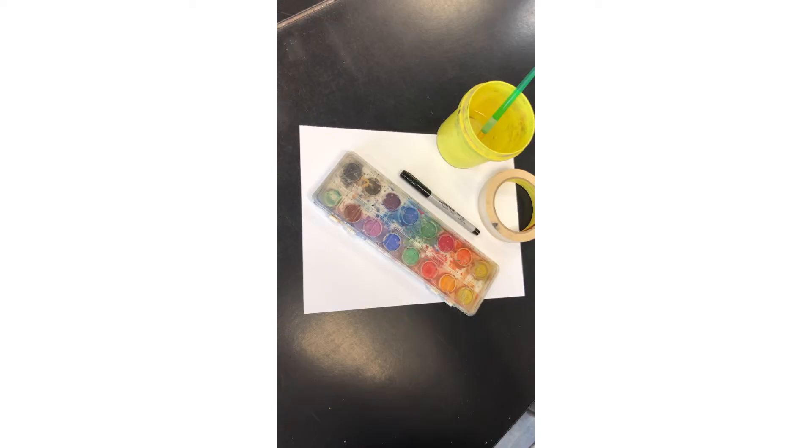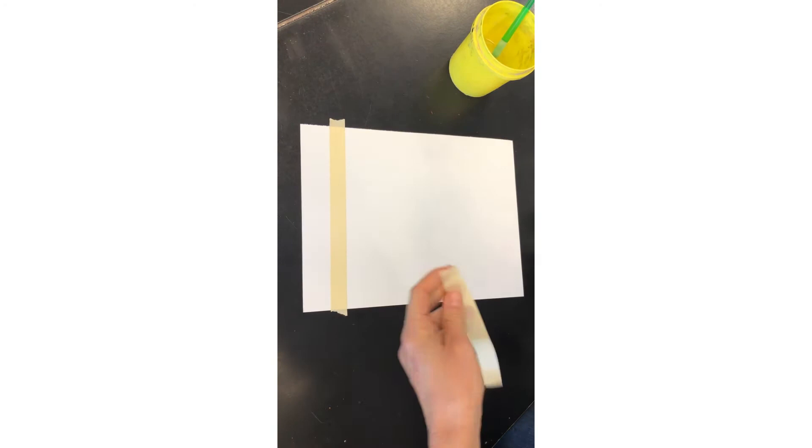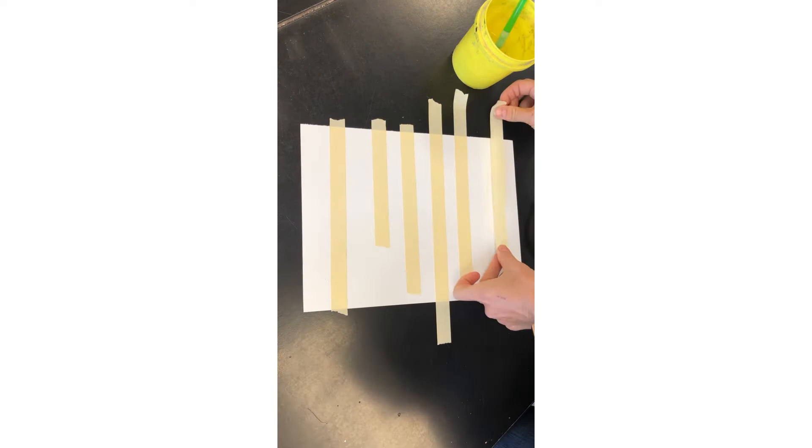First we're going to take our masking tape and place our trees wherever you'd like. You can do tall ones, short ones. If you make some in the back it gives our painting a little more depth.